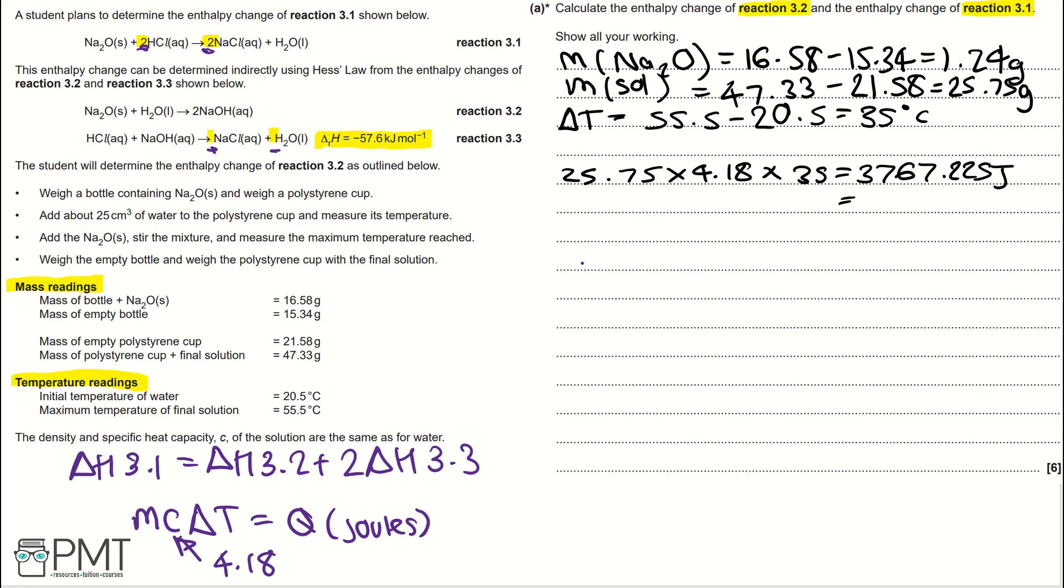In the question, we use kilojoules per mole, so we need to turn this into kilojoules, 3.767225 kilojoules. Next, we need to work out the moles of Na₂O. To do this, we need to take the mass, 1.24, and divide by the relative formula mass of Na₂O, which is 23 times 2 plus 16, which will give us 0.02 moles of Na₂O.